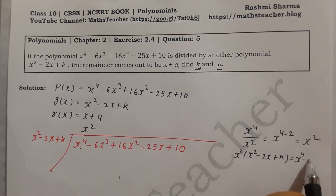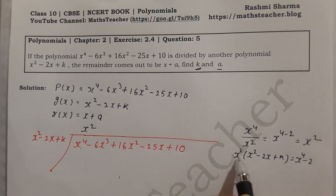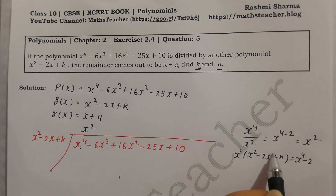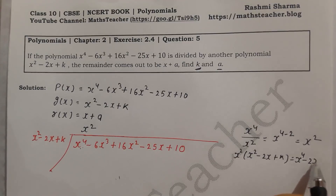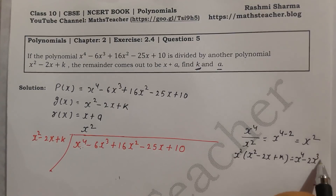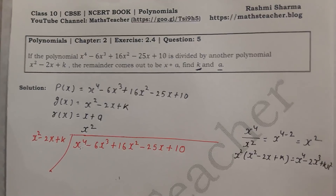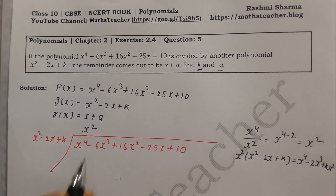Then x² times minus 2x: the power is 2 plus 1, giving minus 2x³. And x² times k gives kx². So the full product is x⁴ minus 2x³ plus kx².